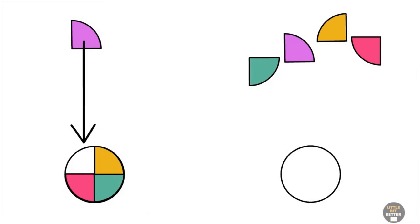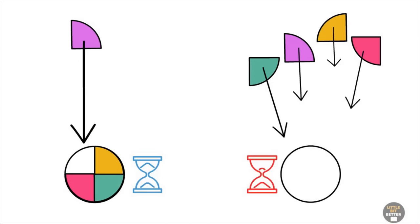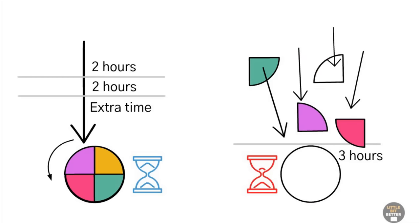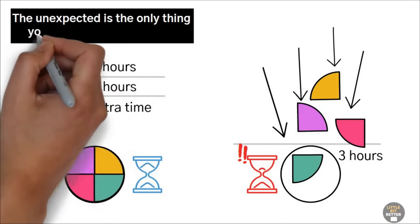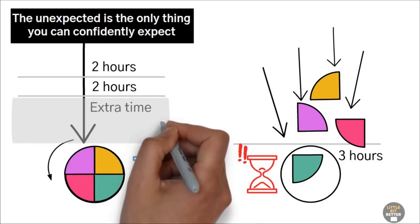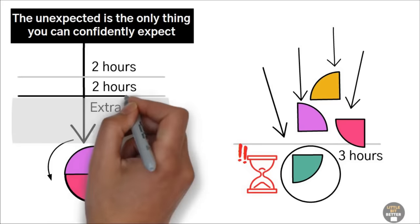As a result, they need much less time than the rest of us. They set a slow pace and always allocate extra time for unexpected events. Most people underestimate the time it takes to complete a task. They always expect that everything will go right, yet nothing ever goes right. The unexpected is the only thing you can confidently expect. Effective people therefore allow a fair margin of time beyond what is actually needed.